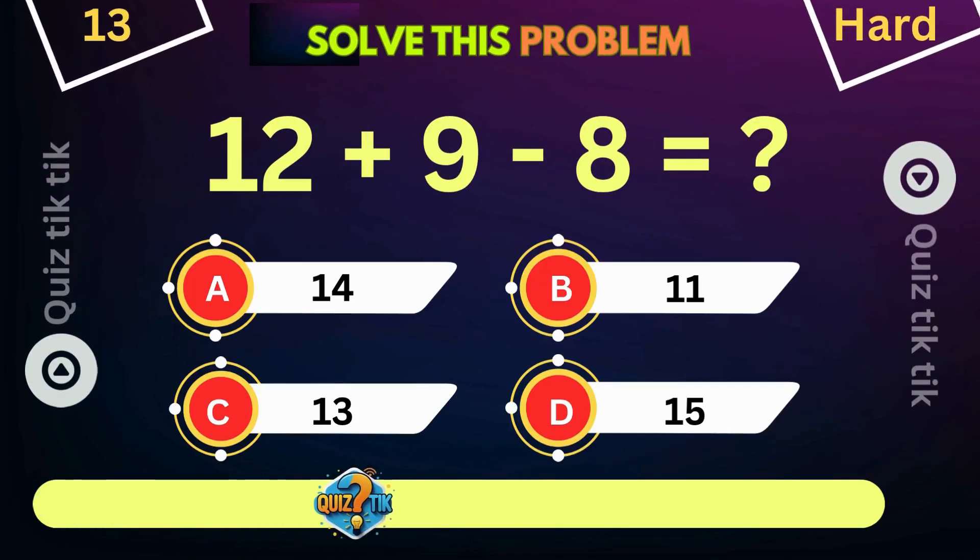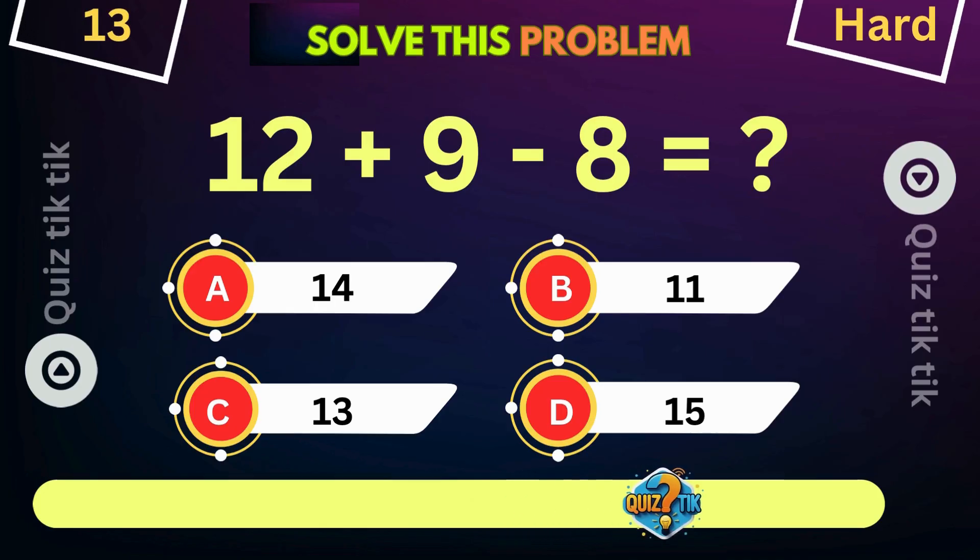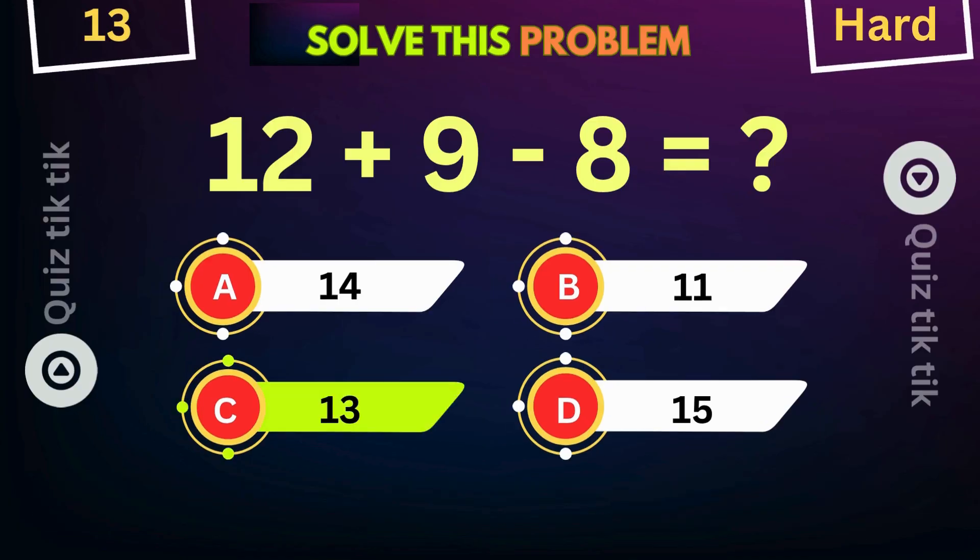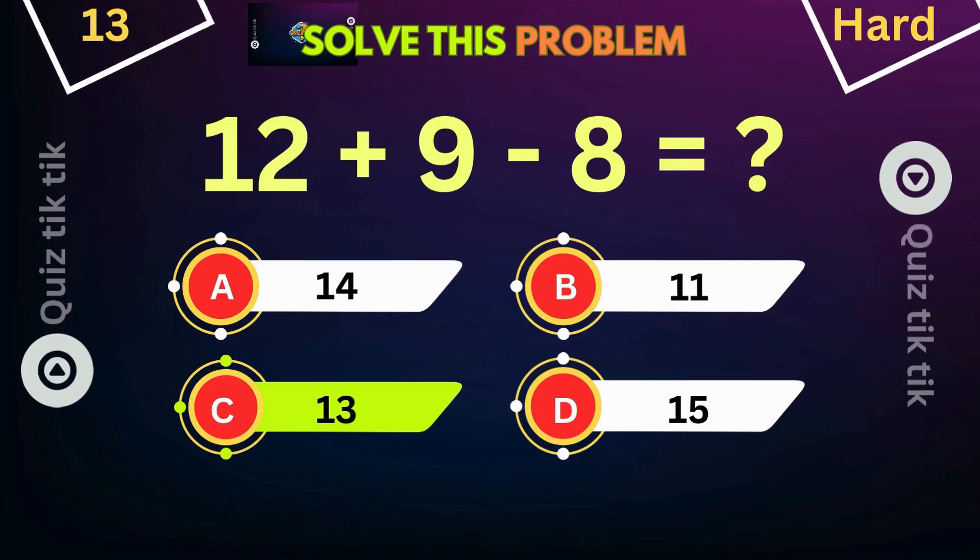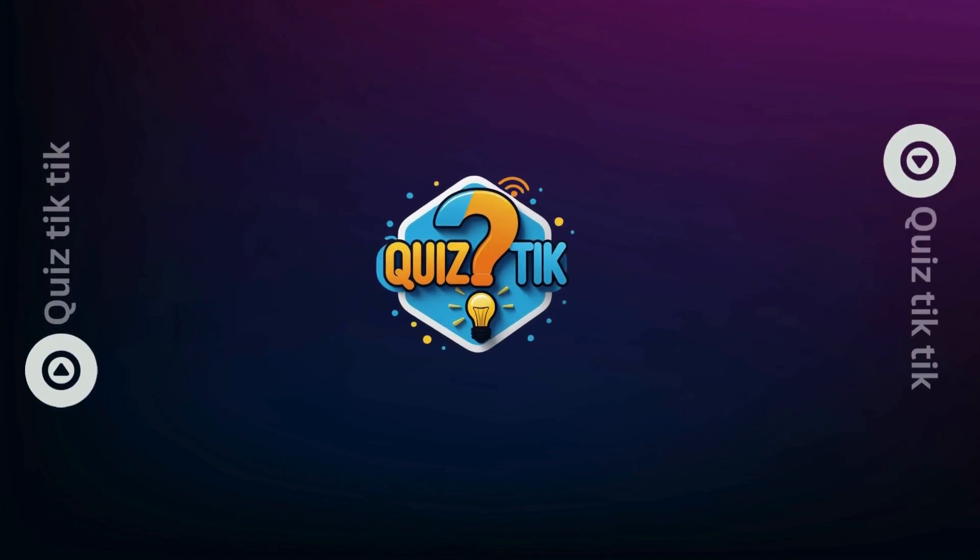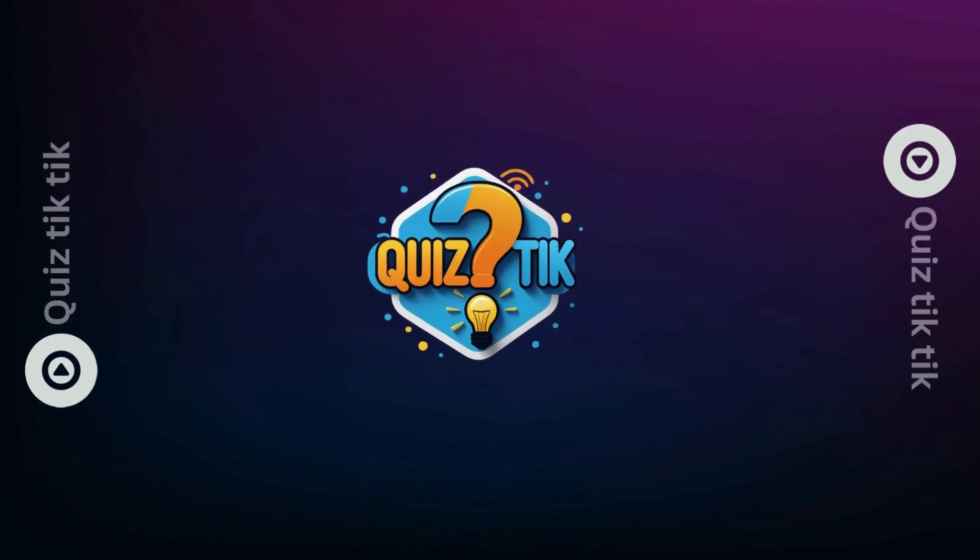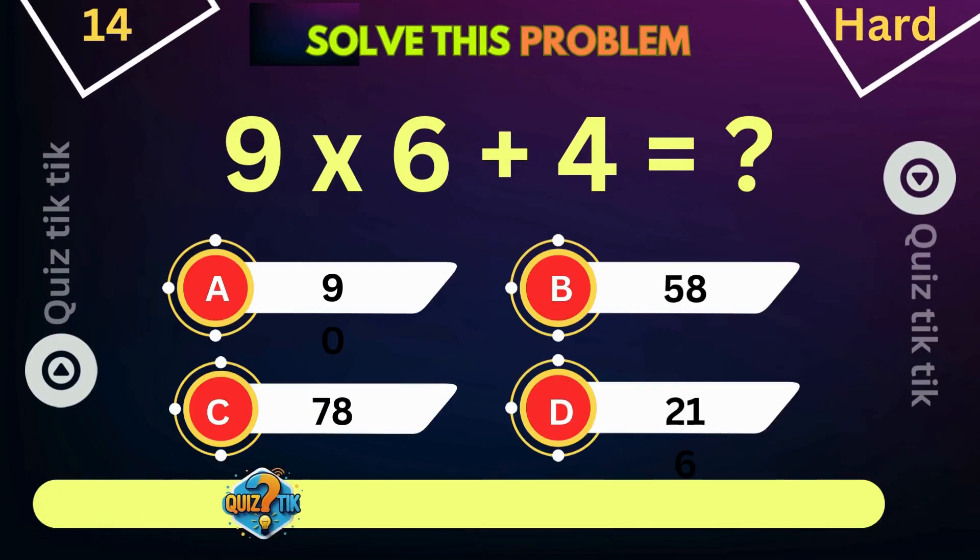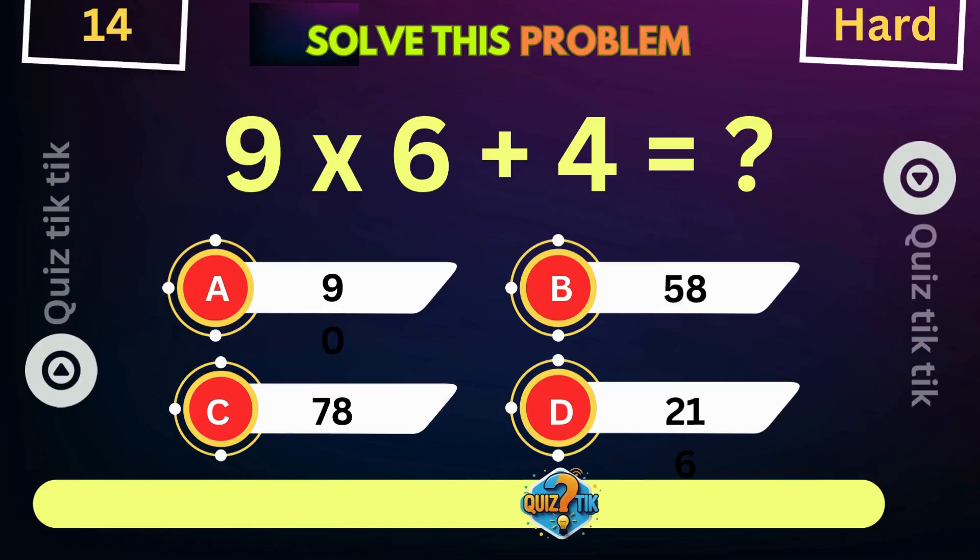12 plus 9 minus 8 is equal to. 9 multiplied by 6 plus 4 is equal to.